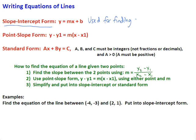Remember that slope is the coefficient in front of the x, the m. This equation of a line in slope-intercept form is also extremely easy to use and useful for graphing. All we have to do when we graph is plot our y-intercept, which is the b, and then use our slope as rise over run to get our graph. So slope-intercept form is something you definitely want to have memorized, and we will use it quite a bit.